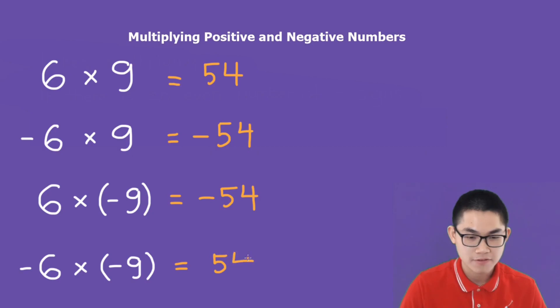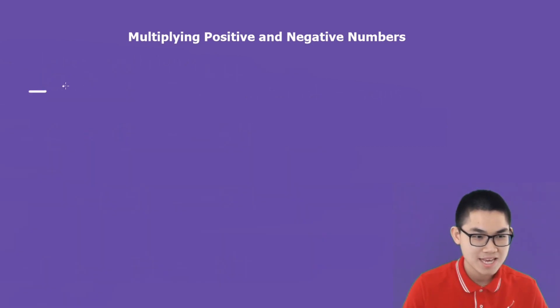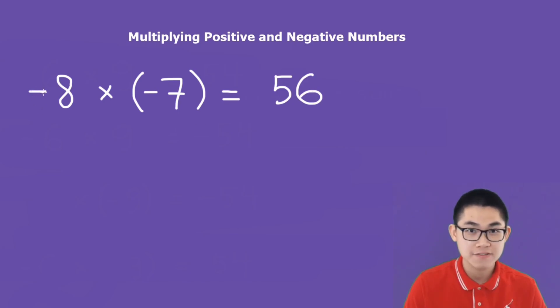It will simply be 54. What is negative 8 times negative 7? So go ahead and try this one. We know 8 times 7 is 56. And there are 2 negative signs. So the answer will be positive.